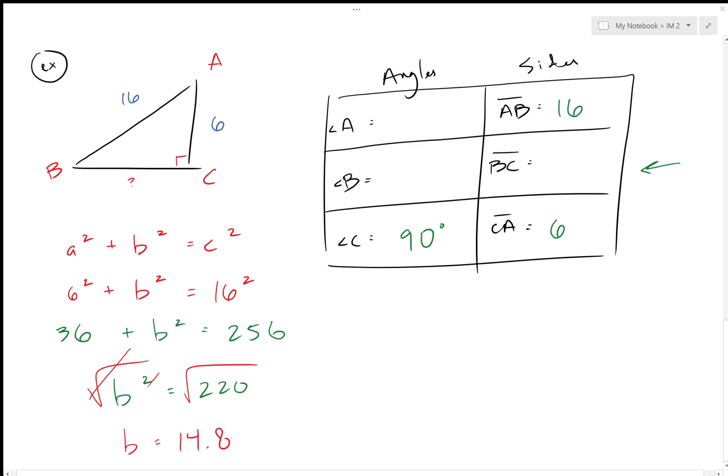Alright, it is labeled as B, but we were finding BC, so we put that in there. Just go for it, so 14.8.